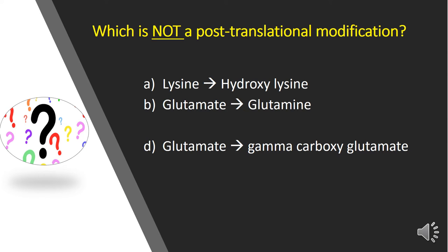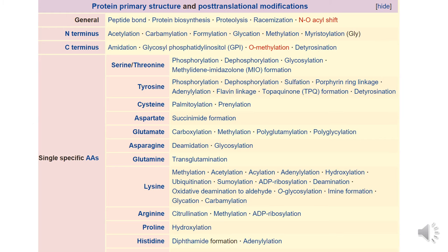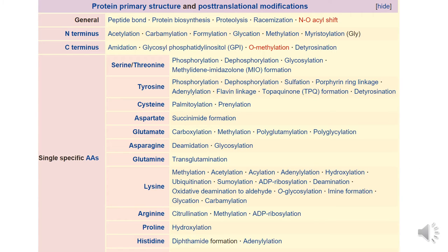What about the other options? Option C: hydroxylation of proline and hydroxylation of lysine. This modification is done by vitamin C, which is important for cross-linking of collagen and tensile strength of collagen. So we can rule out this option also.